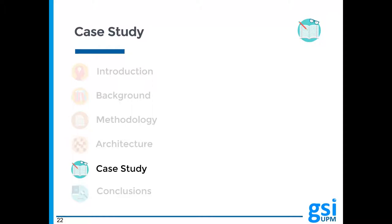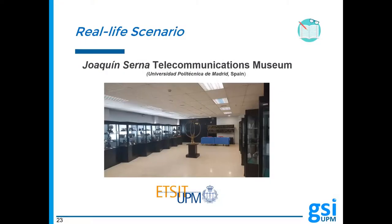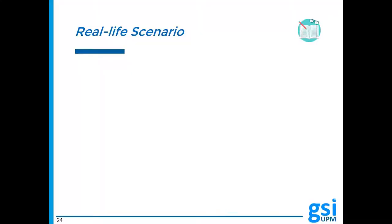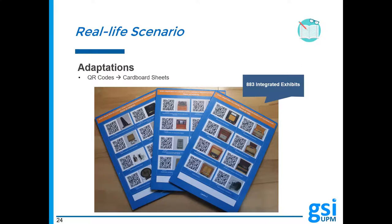We will now elaborate on the implementation of the proposed system in a real-life scenario. A prototype of the platform is being implemented at the Joaquín Cerna Telecommunications Museum at Universidad Politécnica de Madrid in Spain. The platform has been adapted to present information and questions in Spanish. Additionally, QR codes have been printed into cardboard sheets — there are eight QR codes per cardboard, each complemented with an image of the exhibit and its name. A total of 883 exhibits have been integrated. The choice of format aims to encourage visitors interested in learning more about any museum object to take one of these cardboards and walk around the museum looking for the exhibits shown, thus shifting the visit more towards a treasure hunt experience.